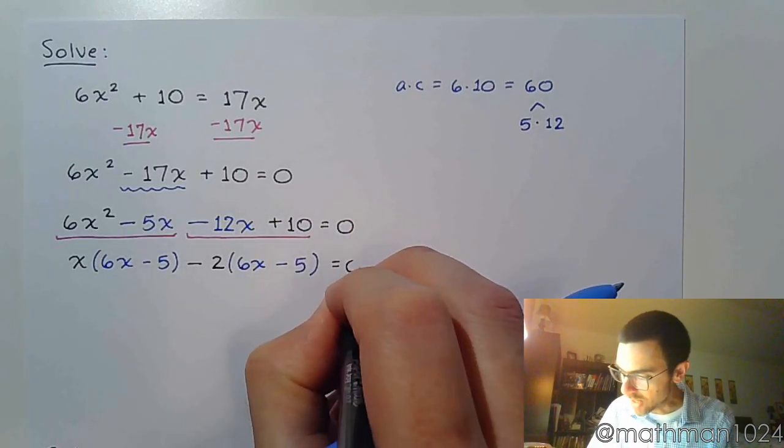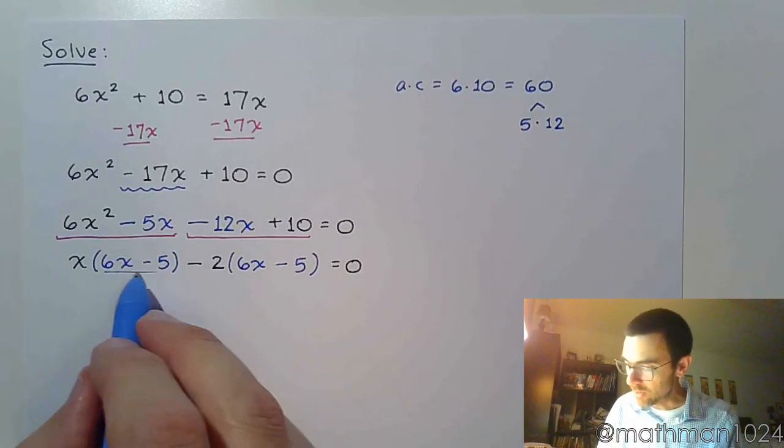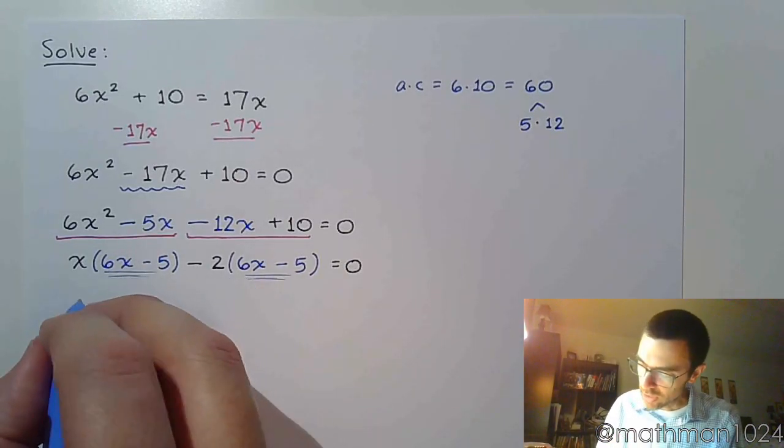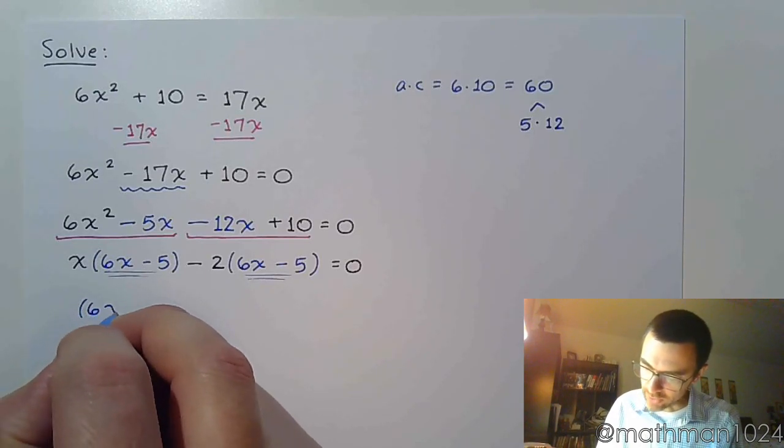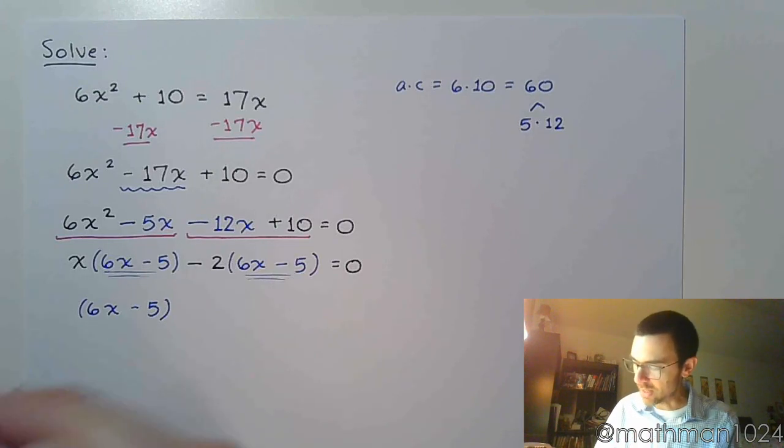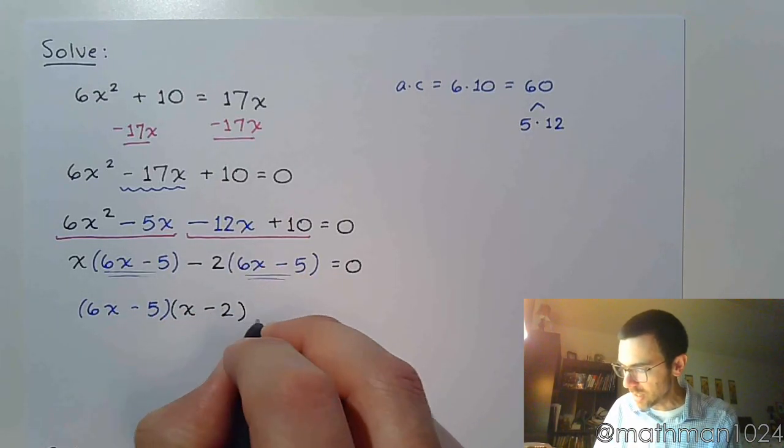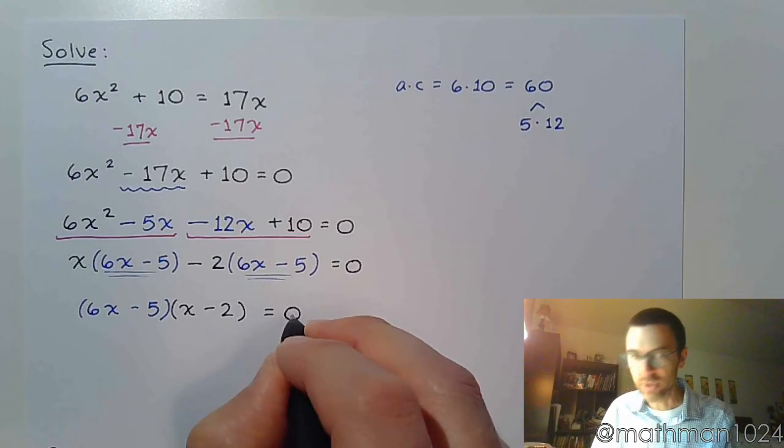Now we need to make sure we understand that this is the middle part of factoring by grouping and we're not actually done. These guys are exactly the same, and so that becomes the factor that we write in front: (6x - 5)(x - 2) = 0.